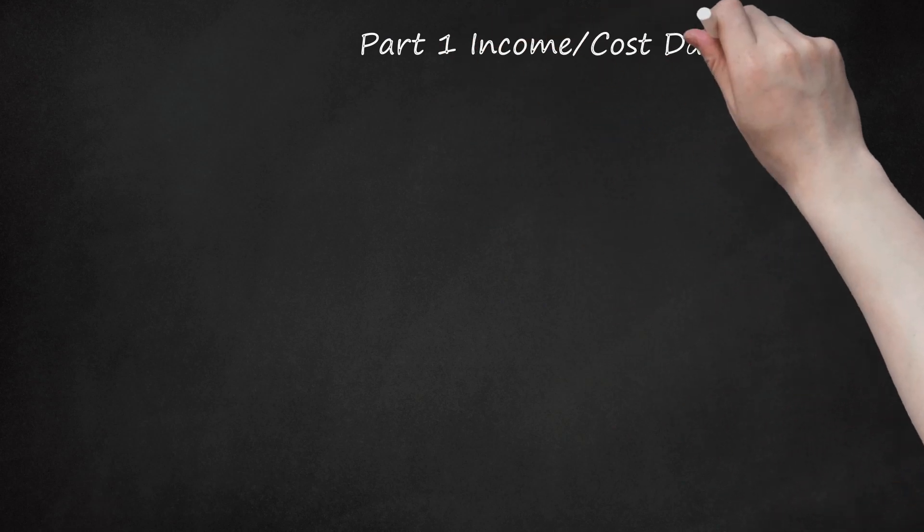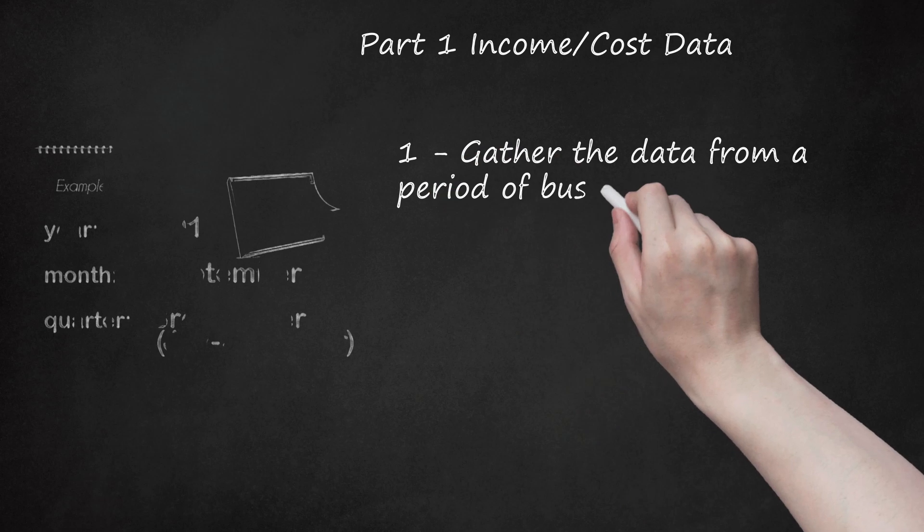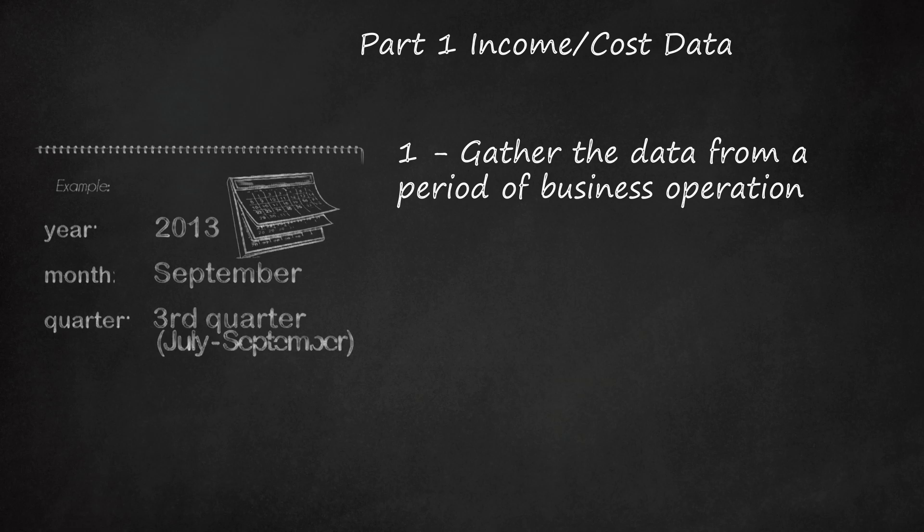You can find out how to calculate the gross profit margin for your business using the method below. Part 1: Income Cost Data. Step 1: Gather the data from a period of business operation. This can be for the year, the month, or the quarter, but all data should be gathered over the same period of time to achieve accurate figures.